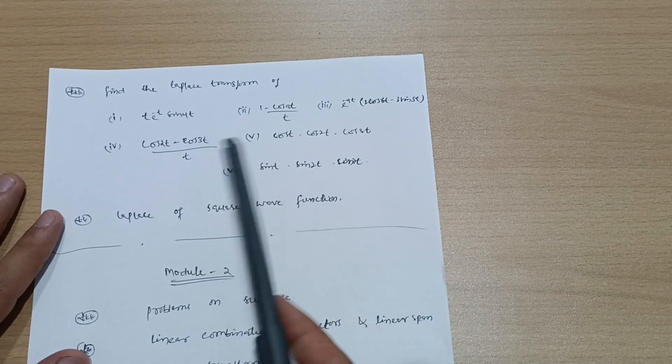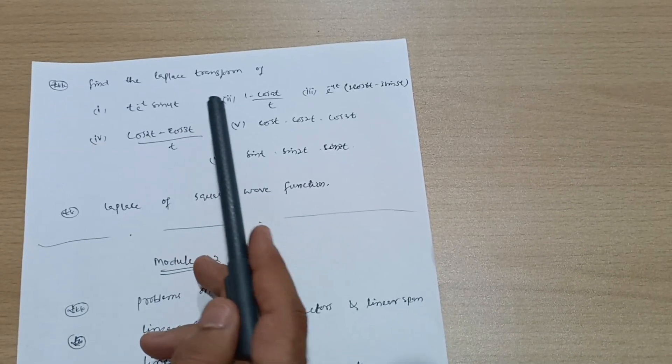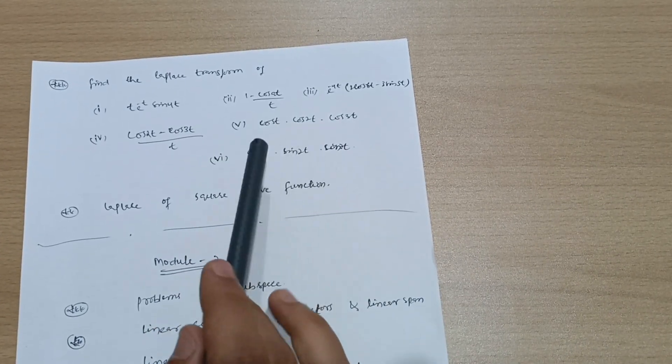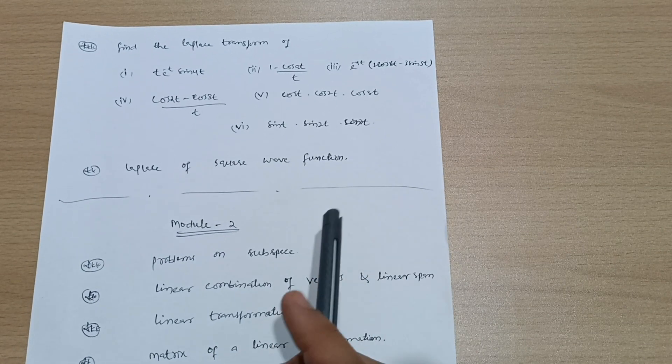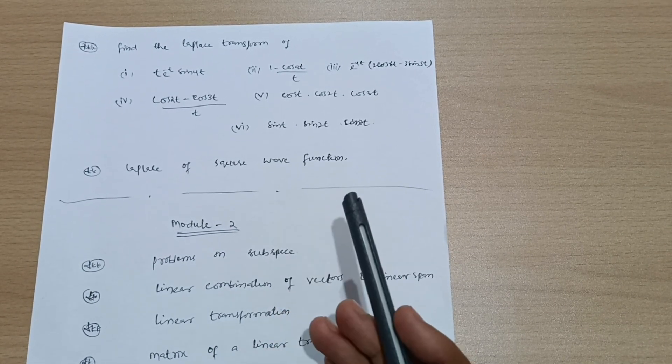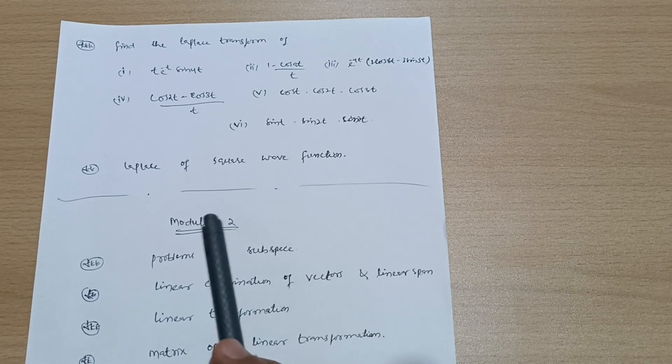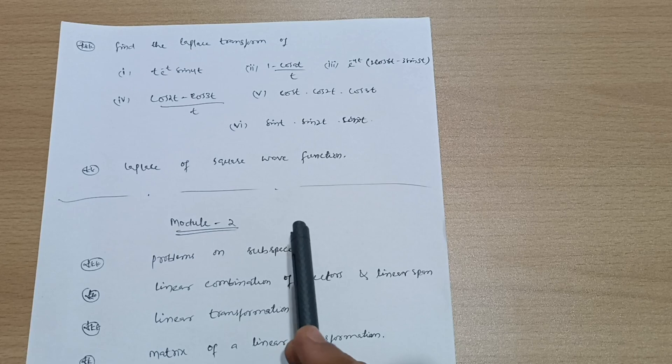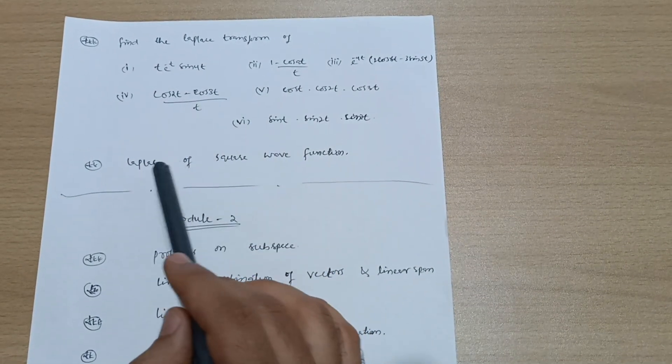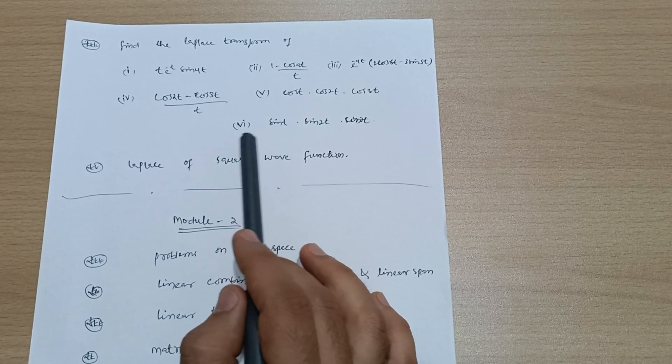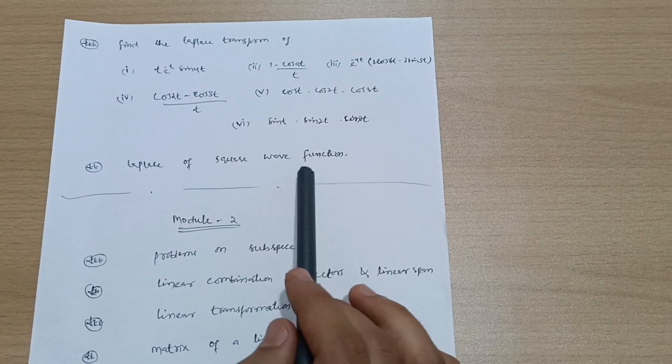Also sin t·sin 2t·sin 3t - these are important ones you have to practice. Find the Laplace transform. If you're finding this chapter easier, that's good. I'm talking about the worst case; otherwise I've discussed the passing package. Those three modules are the passing ones. If you're lagging in some topic, then you have to go through another module. Last topic of Laplace transform is square wave function - it will be a definite question.